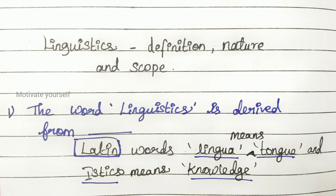First question: the word 'linguistic' is derived from which language? Answer: the Latin word — 'lingua' means tongue and '-istics' means knowledge.